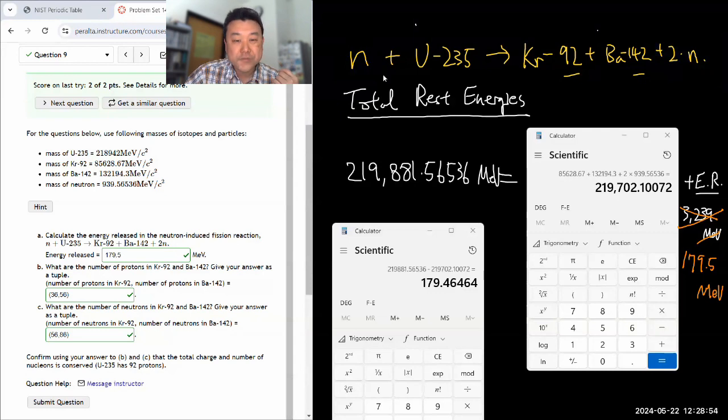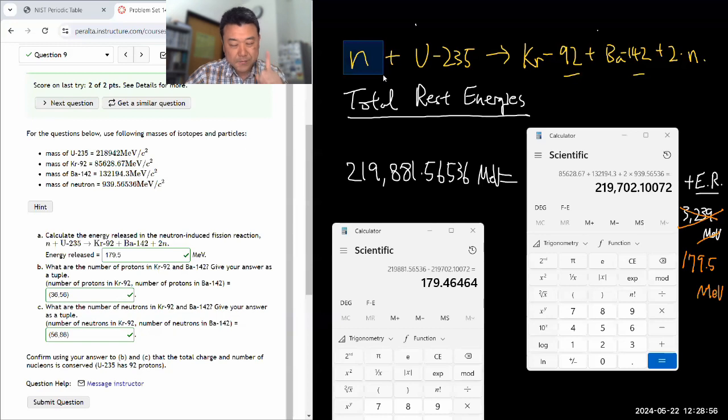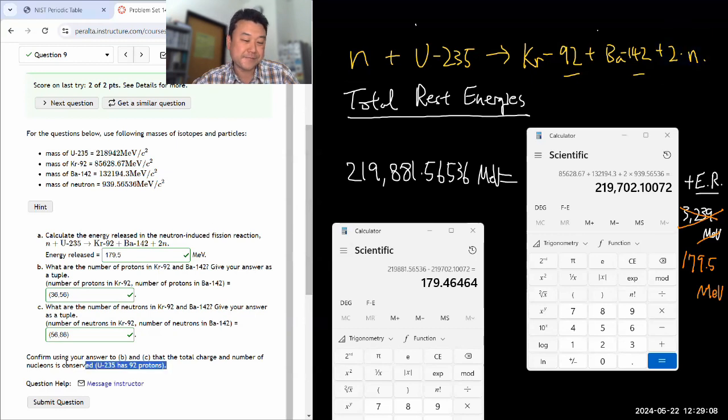Okay, 143, no, 144 neutrons, including this, that came in. And I had 142 plus two, 144 neutrons that went out. So, yeah.